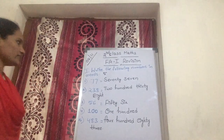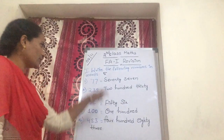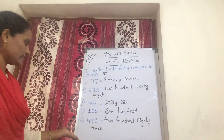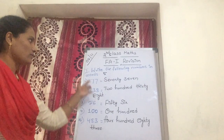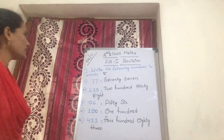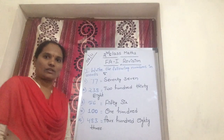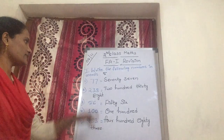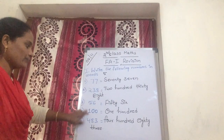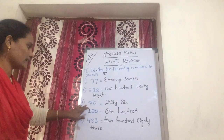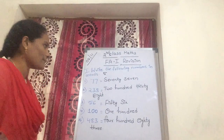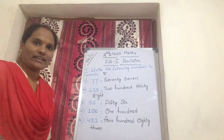Write the following numbers in words. I will give five questions. Please copy in your class book. Now first one: write the numbers in words. You will get numbers and write the number names. First one: seventy-seven.